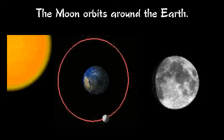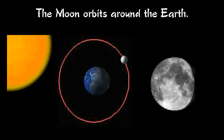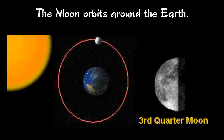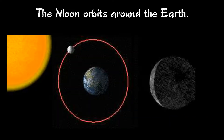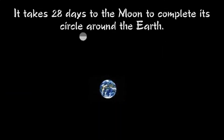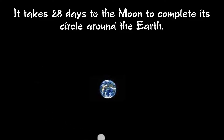The Moon orbits around the Earth. It takes 28 days for the Moon to complete its circle around the Earth.